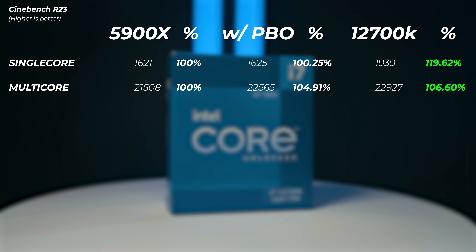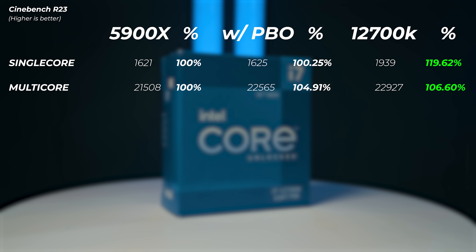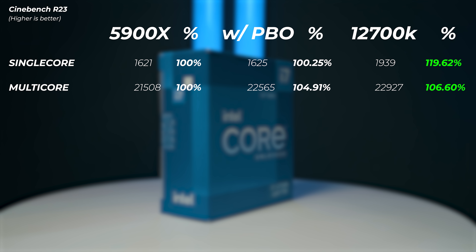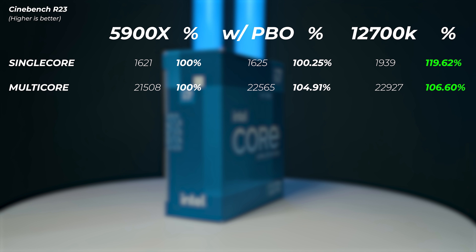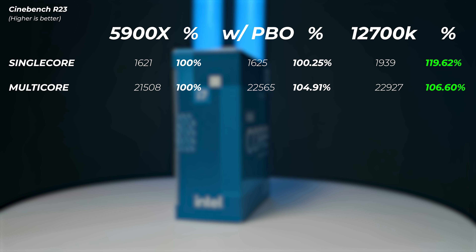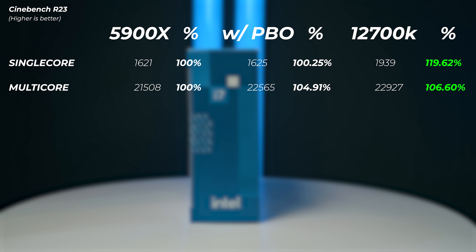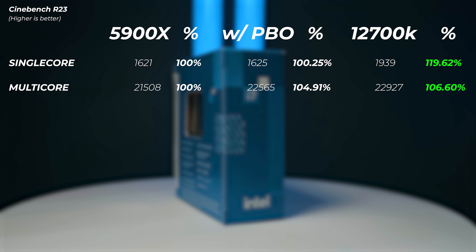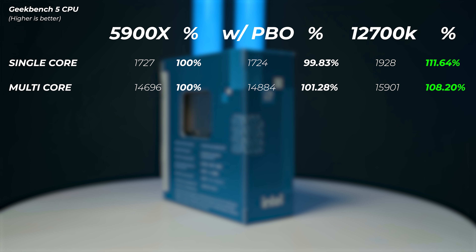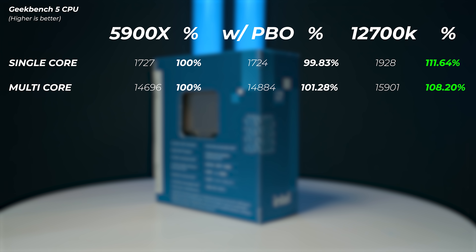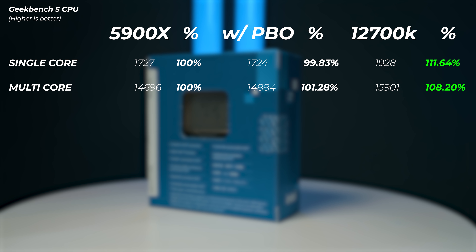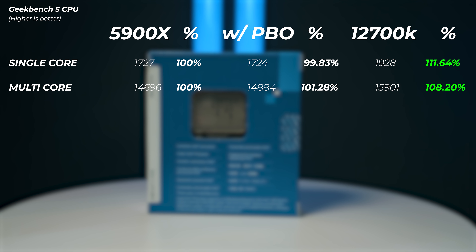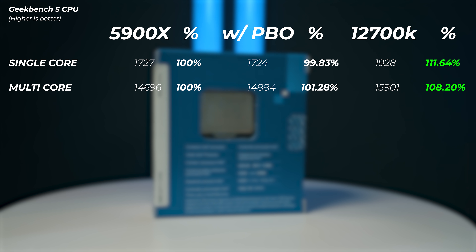In Cinebench R23, enabling PBO gains 0.25% in single-core and 4.9% in multi-core on the Ryzen. The 12700K is about 20% faster in single-core and 6.6% faster in multi-core — interesting given it has fewer threads, meaning the IPC on the 12700K is very strong. In Geekbench 5, the 12700K is 11.6% faster in single-core and 8.2% faster in multi-core scores.